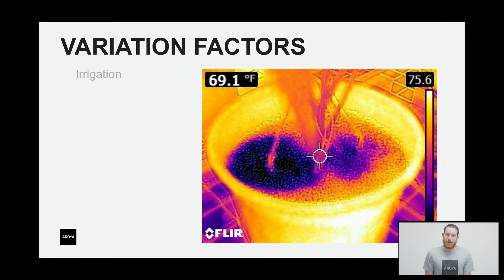This could be a significant factor in determining your crop uniformity. So irrigation systems that are solid, reliable, are a great way to help increase your crop uniformity.